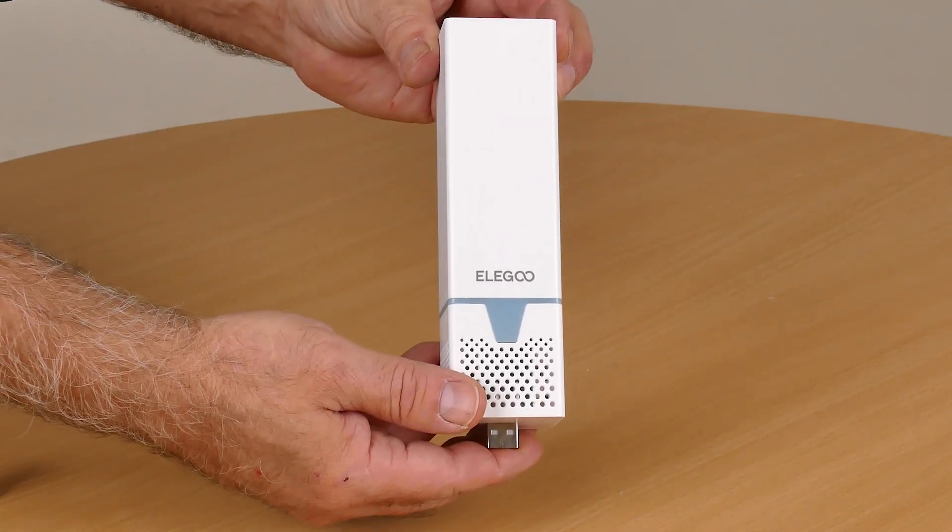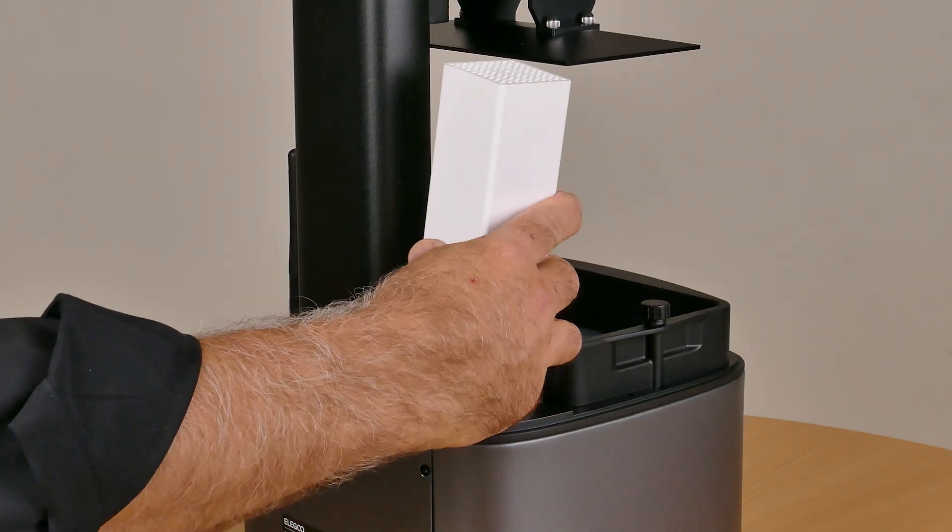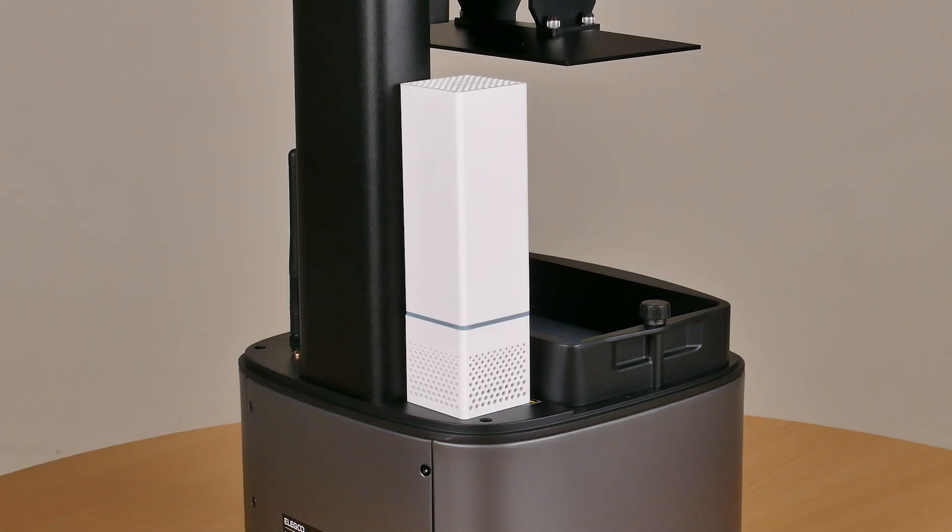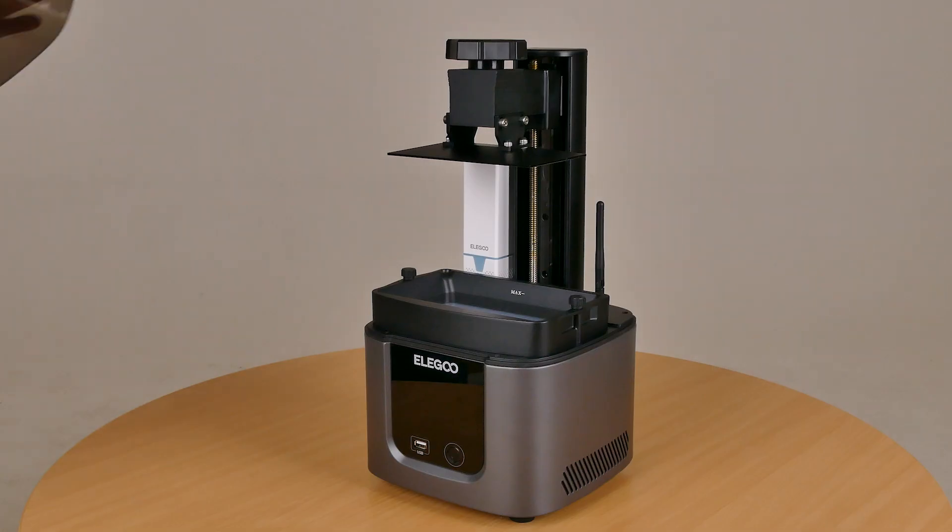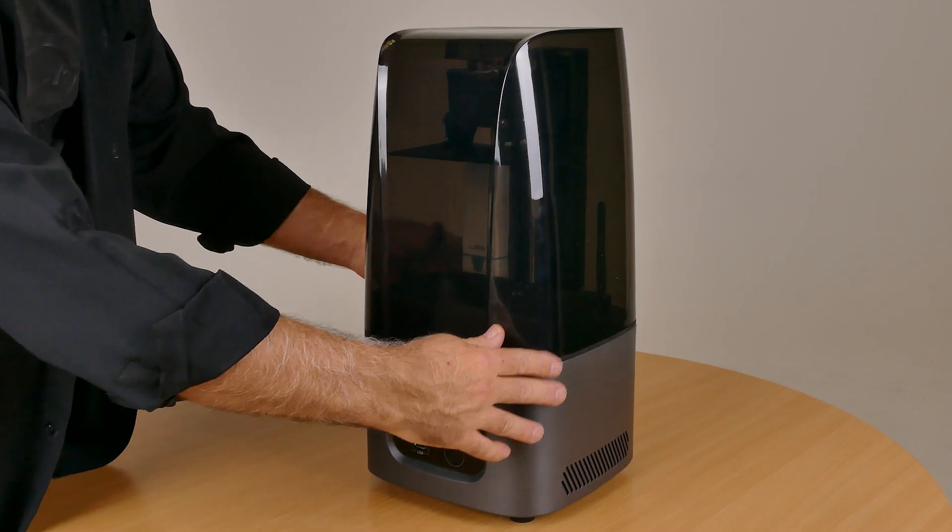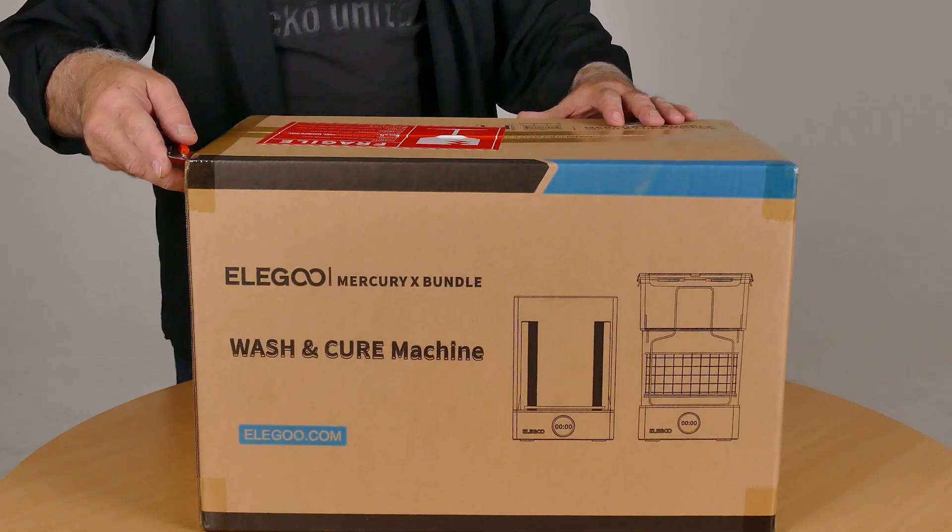Just like any USB port you do have to spin the device around three or four times before it actually slots in. The other difference between the Ultra and its predecessor is the predecessor had a red lid, this one's got a black one.